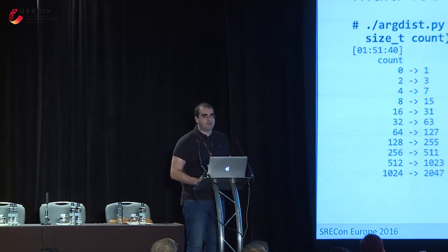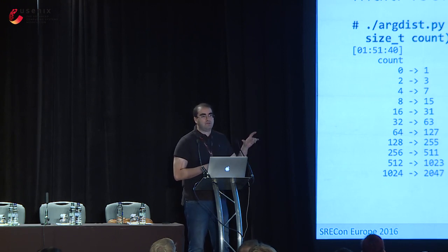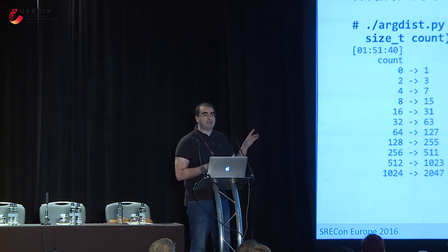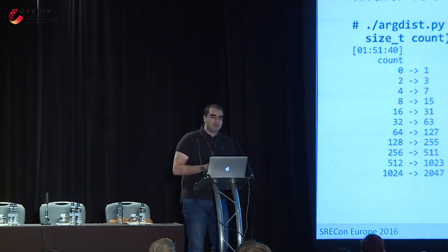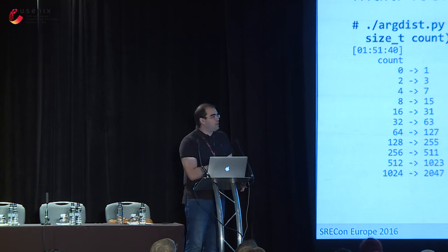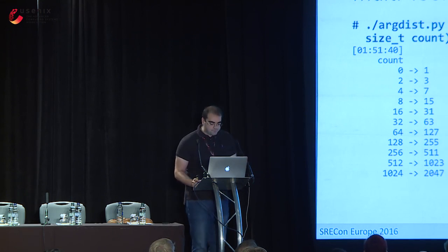Another example gives you latency information with argdist. Here we're tracing vfs_read in the kernel — it takes a file pointer, a buffer, and a count. We want the latency of that function and filter for latency over one million nanoseconds (one millisecond), then build a histogram on the byte count of reads. So we only aggregate reads that took more than a millisecond. We had 20 reads where the number of bytes was anywhere from zero to one — so it's not necessarily large reads that had slow latency.